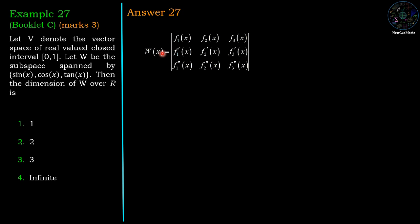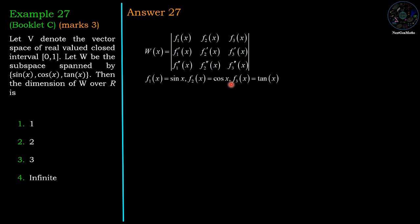The Wronskian matrix has the first row as the functions, the second row as the first derivatives, and the third row as the second derivatives. Here f1 = sin x, f2 = cos x, f3 = tan x.